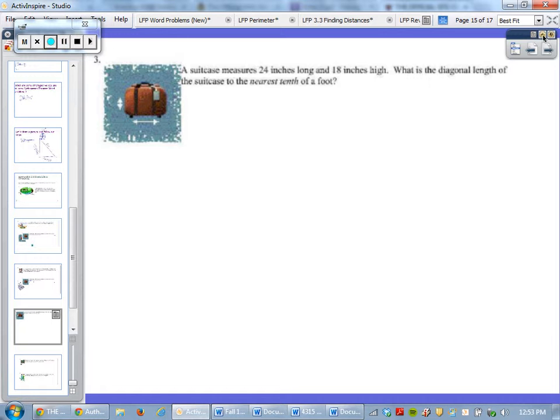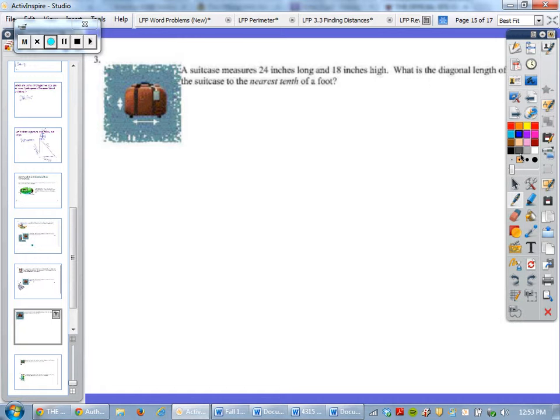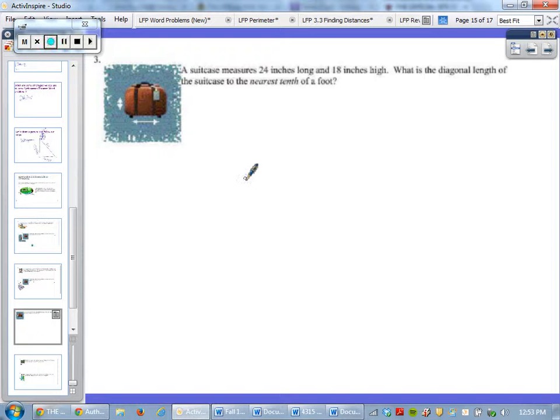From the start we should be concerned with a right triangle. That means no matter what we're talking about, whether it's a suitcase, a ramp, a ladder, a baseball diamond, or anything.